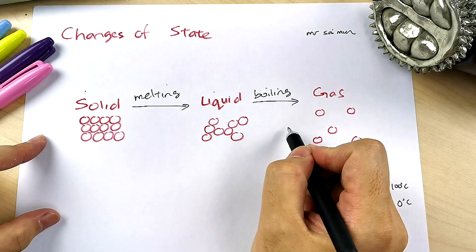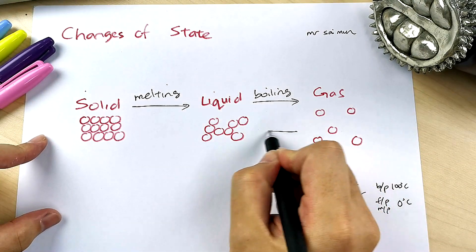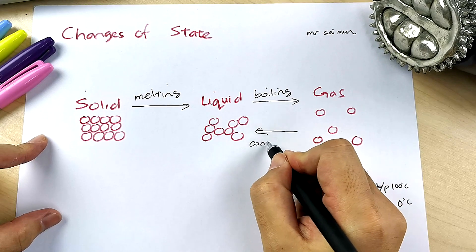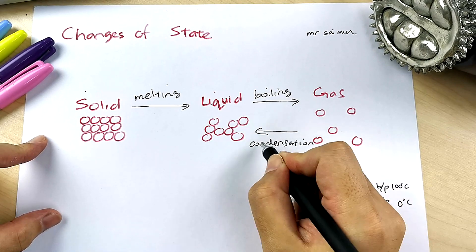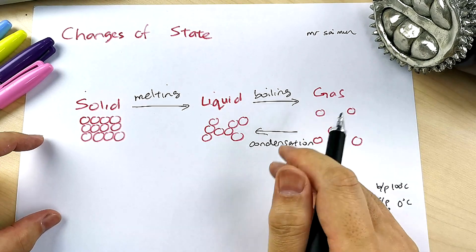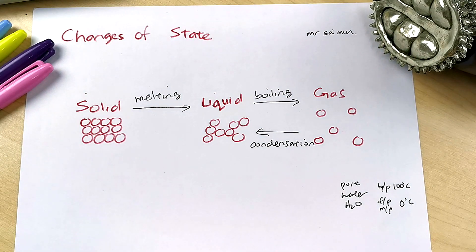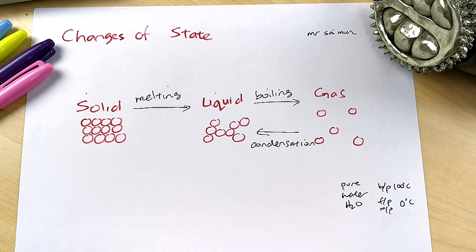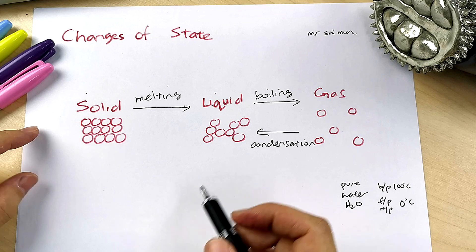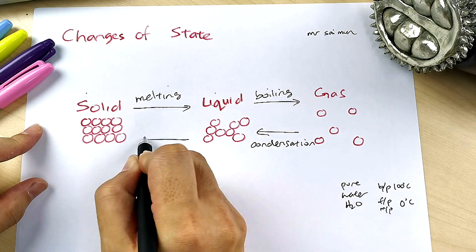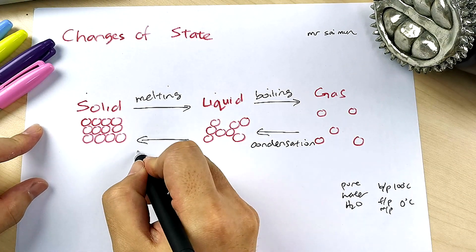Gas to liquid must be condensation. You see a lot of condensation — when you switch on the air con in your car or room, it's very cold, and you can see a bit of water vapor at the window. That is condensation.